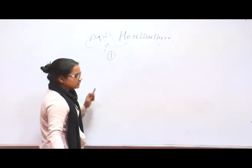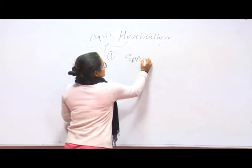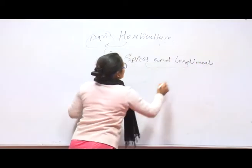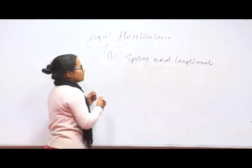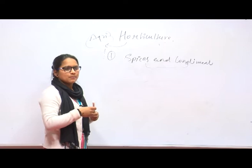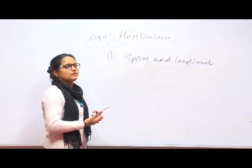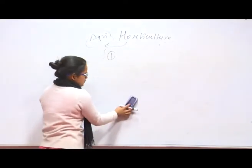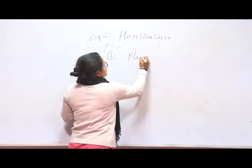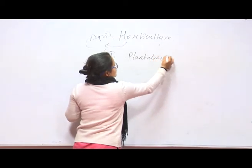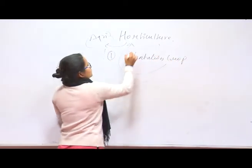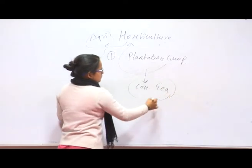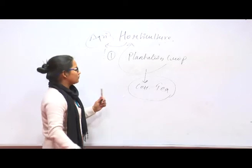Coming to the next branch, that is Spices and Condiments. Spices and Condiments is a branch of Horticulture in which we study about spices — for example, black pepper, cardamom, cinnamon. Coming to the next branch, that is Plantation Crops. It is a branch of Horticulture in which we study about plantation crops like coffee and tea, and the production technology of these crops.